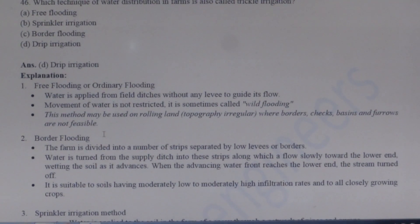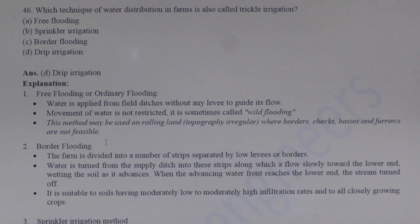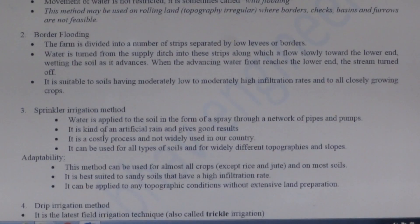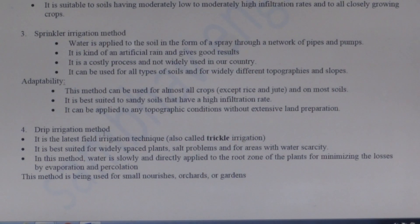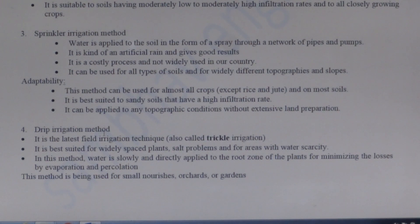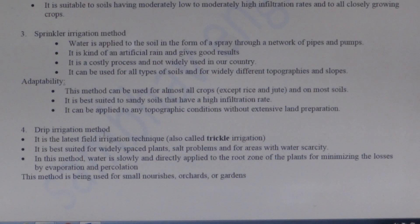Next question: This technique of water distribution in farms is also called trickling irrigation. Drip irrigation is the latest field irrigation technique, also called trickle irrigation. It is best suited for widely spaced plants and for areas where water is scarce. In this method, water is slowly and directly applied to the root zone of the plant, minimizing losses by evaporation and percolation.